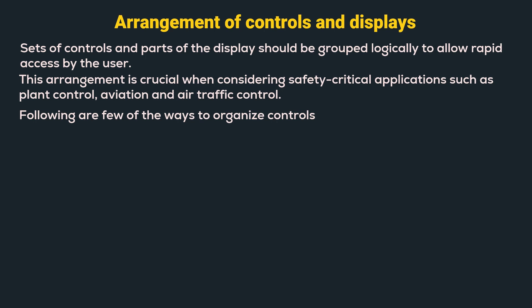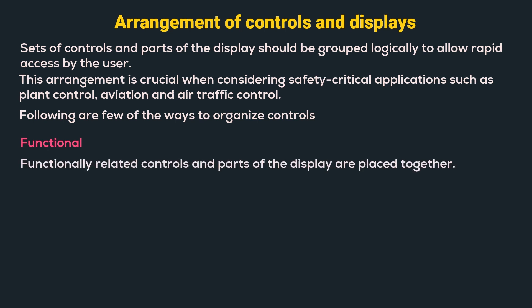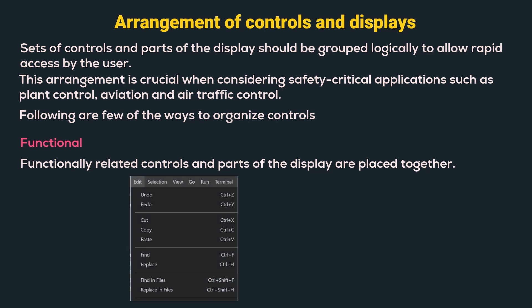There are a few ways to organize controls and displays. The first is functional: functionally related controls and parts of the display are placed together. For example, we can see under the Edit menu, controls are grouped by functionality — one group consists of cut, copy, and paste, whereas another group consists of find and replace.